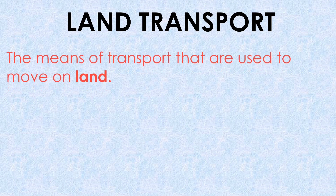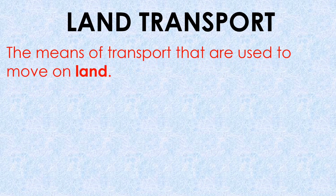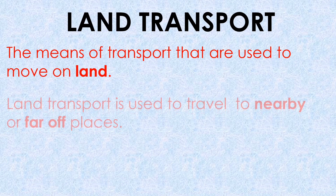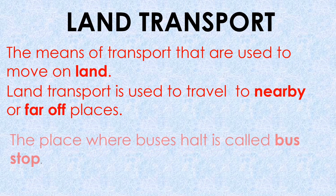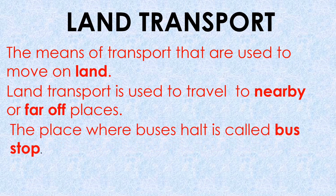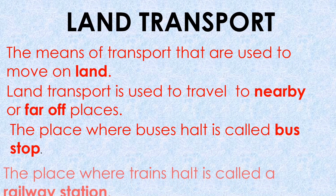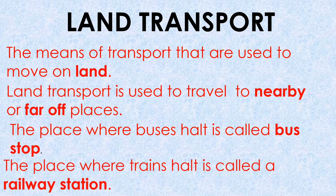First, we read land transport — the means of transport that are used to move on land. Land transport is used to travel to nearby or far off places. The place where buses halt is called a bus stop. The place where trains halt is called a railway station. Now we see examples of land transport.